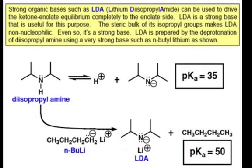Two key features of this base make it appropriate for forming enolate anions. Recall from the last webcast that the pKa of acetone was about 20. The pKa of diisopropyl amine is about 35. Therefore its conjugate base must be a stronger base than an enolate anion.